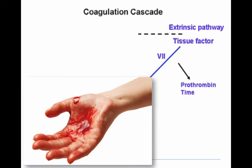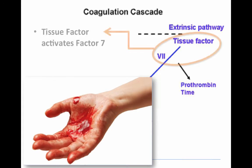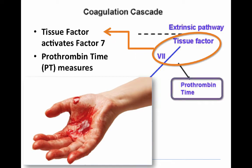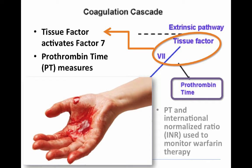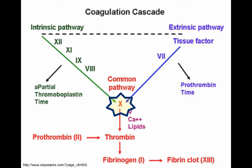On the other side of the coagulation cascade is the extrinsic pathway. When we have things like trauma, tissue factor activates factor VII. A test that we're familiar with that deals with the extrinsic pathway is the prothrombin time or PT, and the INR as well.